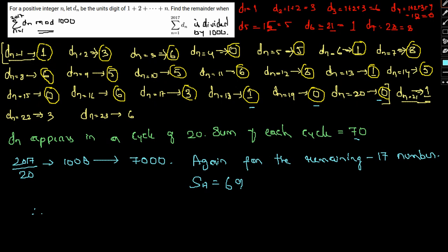Therefore our total sum, the summation 2017, n equal to 1, d of n will be 7069. So when we divide this particular term 7069 by 1000, we have remainder as 69 which is the final answer.